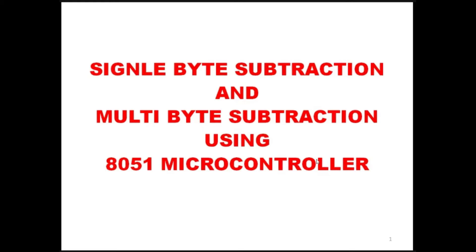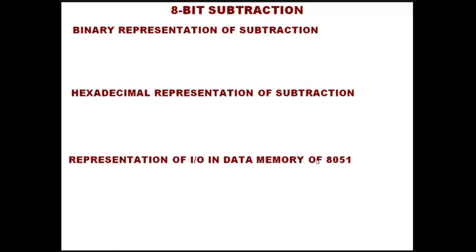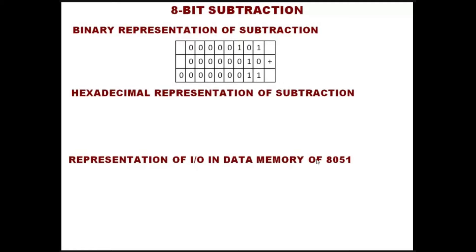In today's class we are going to see how to do a single byte subtraction and how to do a multi-byte subtraction using our 8051 microcontroller. To start with, the binary representation of subtraction is very simple. This is 5 minus 2: decimal 5 in binary is 00000101 and binary 2 is 00000010, and 5 minus 2 equals 3.